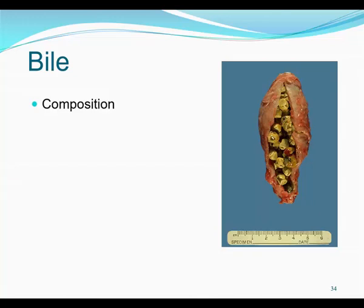Bile is made up of four things: bile salts, bile pigments, cholesterol, and electrolytes. Only bile salts really have the active function — they are an emulsifier. In other words, bile salts break up fat droplets into smaller droplets, kind of like what dish soap does in a sink full of grease. Bile is also required for the absorption of vitamins A, D, E, and K. Almost all of the bile salts are reabsorbed or recycled. Extra bile is stored in the gallbladder and goes there via the hepatic duct but leaves via the common bile duct, where it meets the pancreatic duct and dumps into the duodenum.